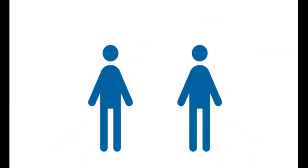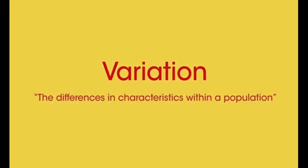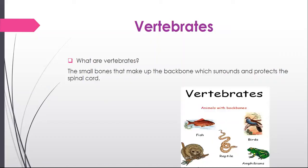In this video we learnt about variation and how it can be controlled by genetics, the environment, or sometimes both. The animals with a backbone are called vertebrates, which are further split into smaller groups: amphibians, reptiles, birds, and mammals.